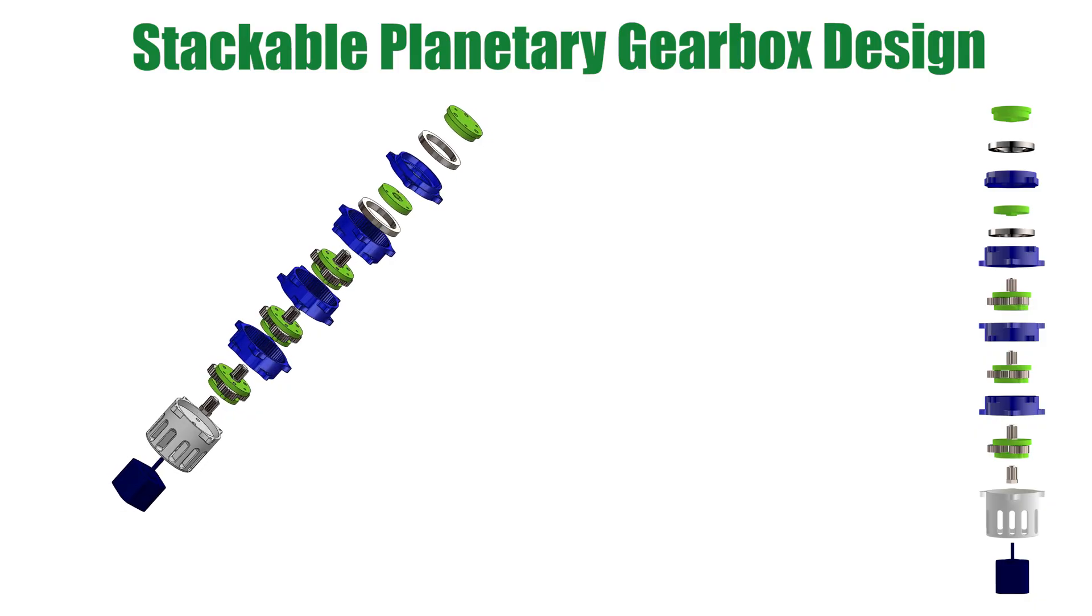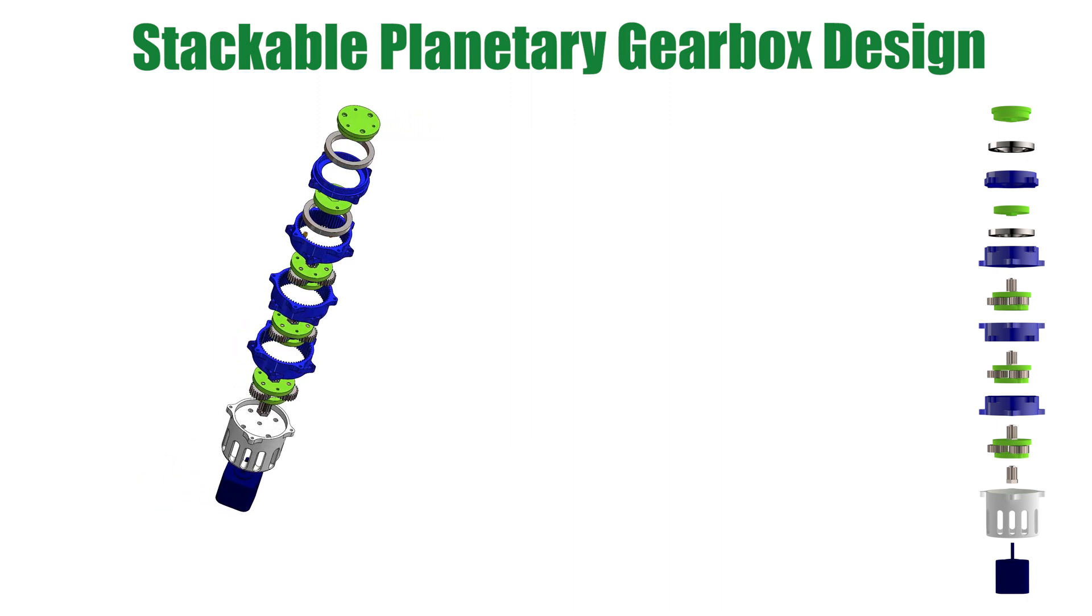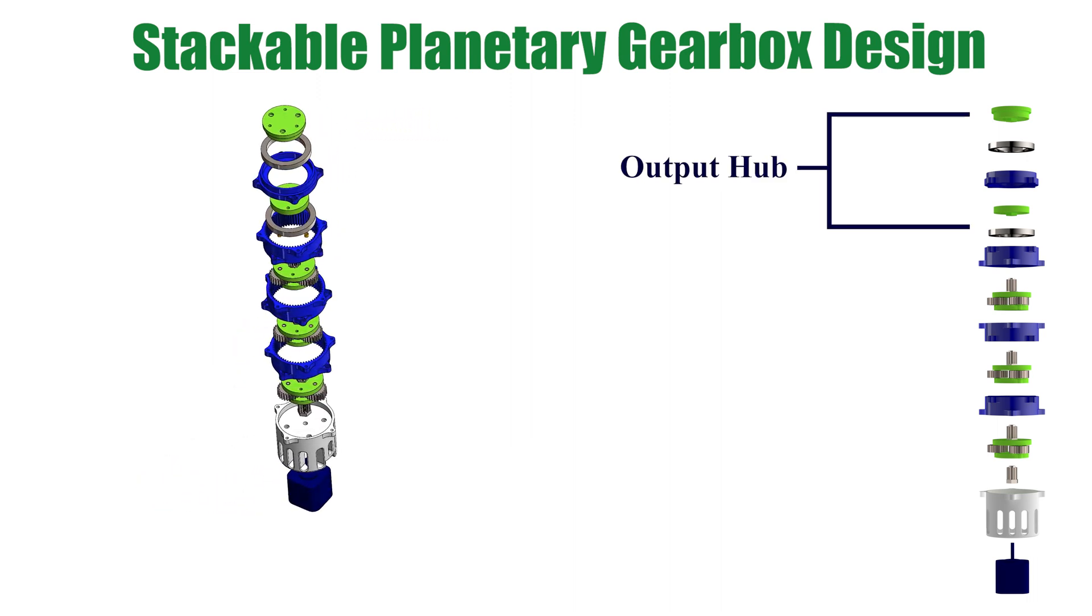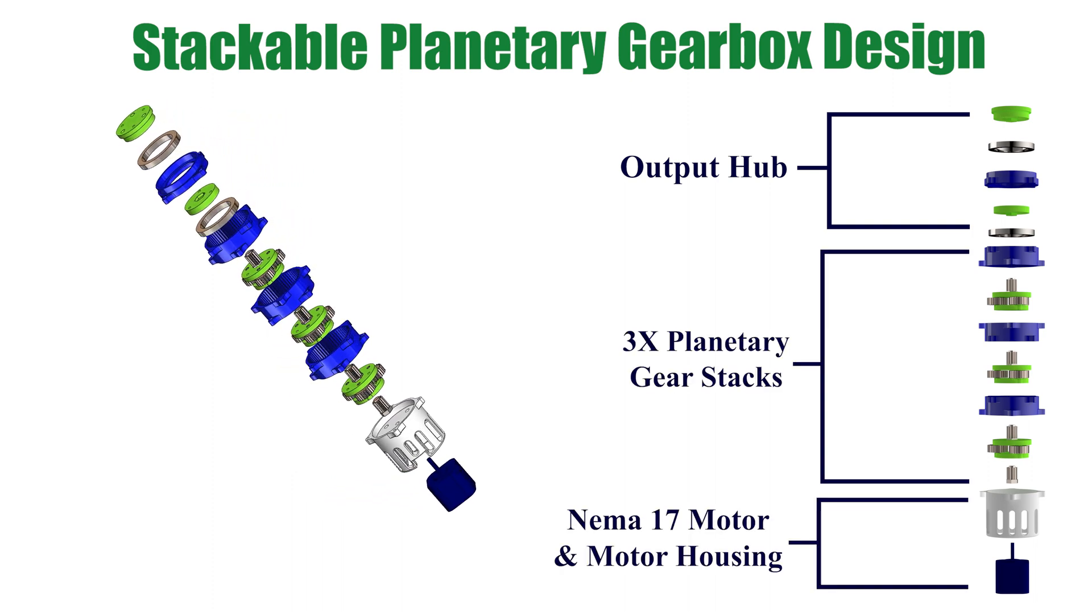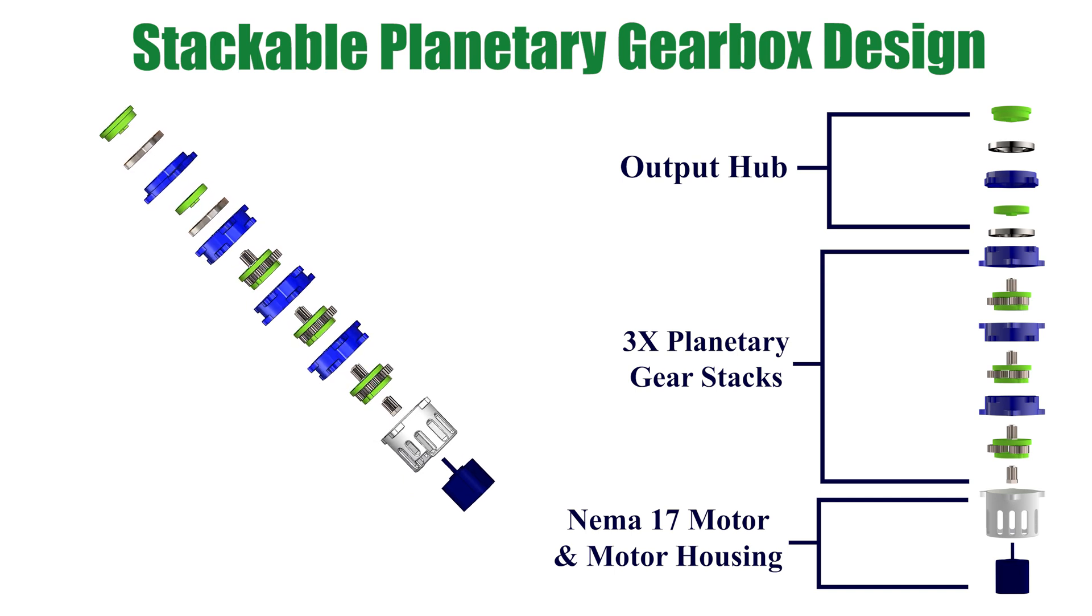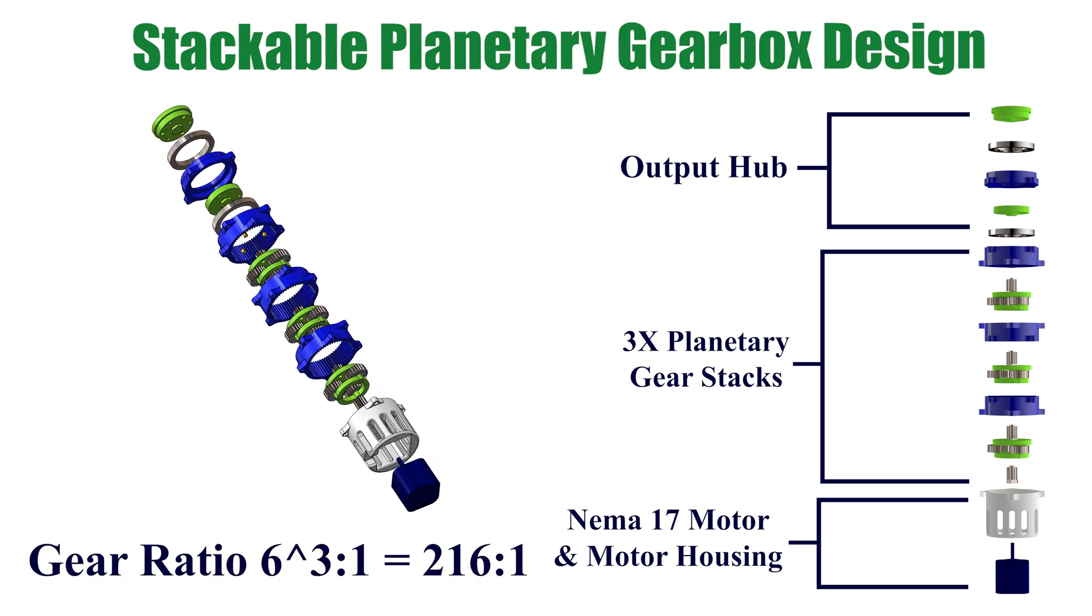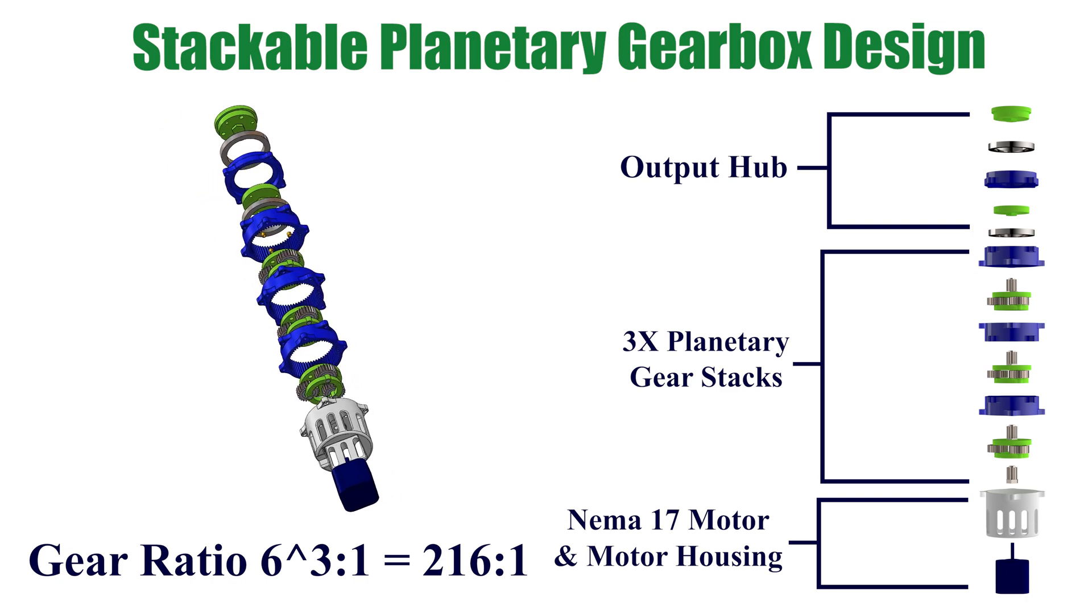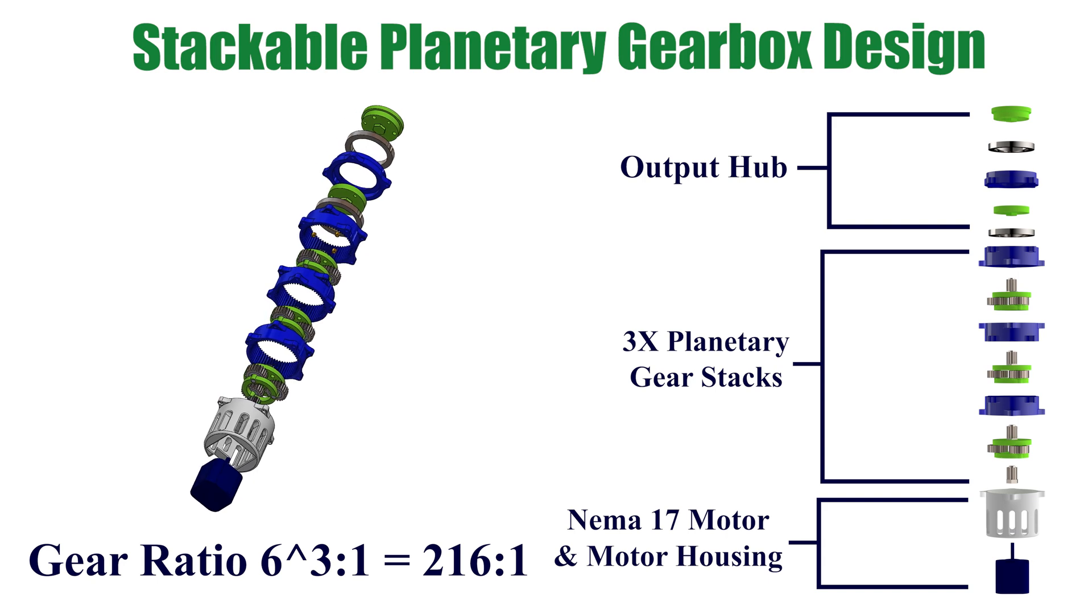Here I have shown an exploded view of the planetary gearbox design. The design can allow for any number of stacks, but the gearbox in this video includes an output hub with two bearings, three sets of planetary gears with bearings in each planet gear, and a motor hub with a NEMA 17 motor attached with four M3 screws. Since I have three stages each with a 6 to 1 gear ratio, I'll have a total gear ratio of 6 cubed to 1 or 216 to 1. This will give me a very high torque multiplier but a low speed.